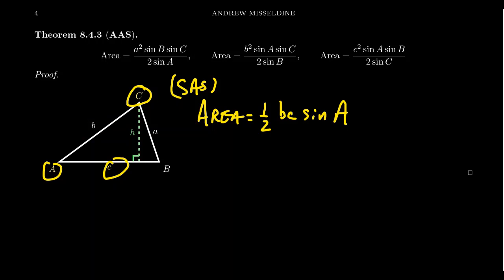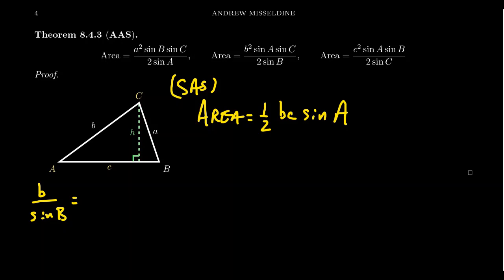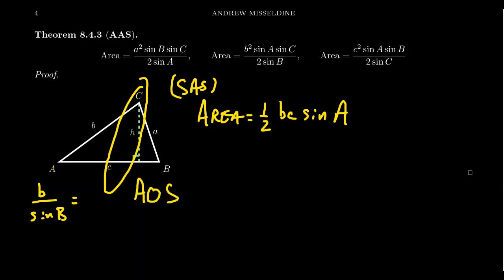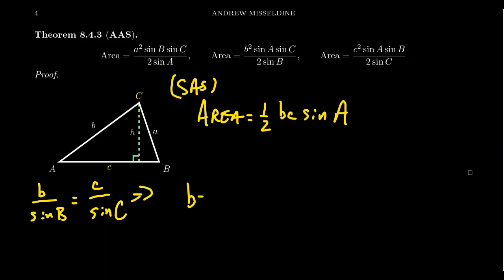To compute the area formula one half BC sine A, we need side length B, but we don't know B. Since we have an angle-angle-side situation, we can use the law of sines. Our goal is just to find enough to compute the area, so we pursue B. By the law of sines, B over sine B equals C over sine C — an opposite angle-side pair. Solving for B, we get B equals little c times sine B over sine C.